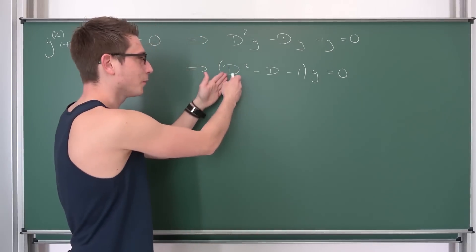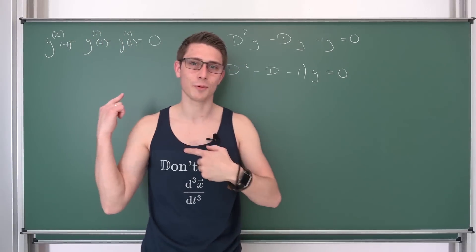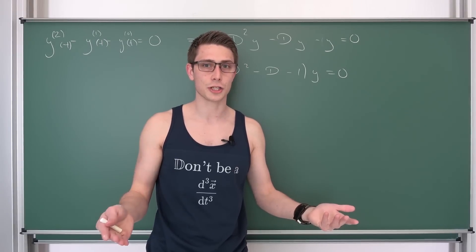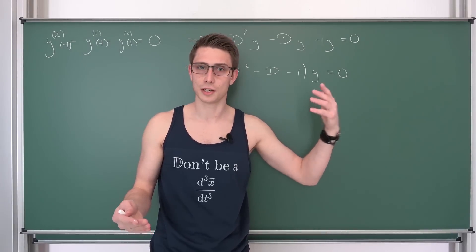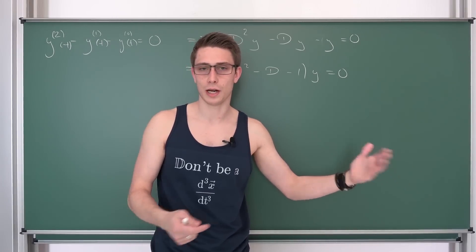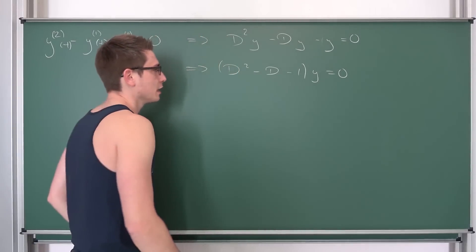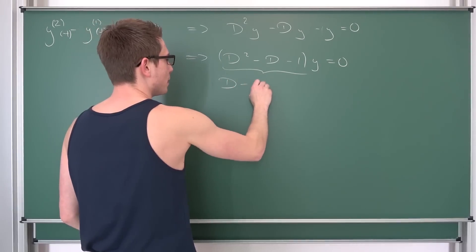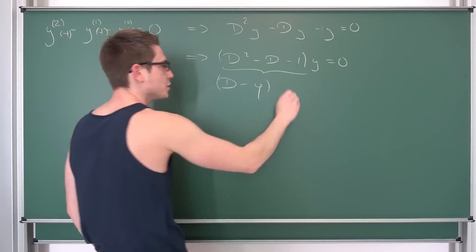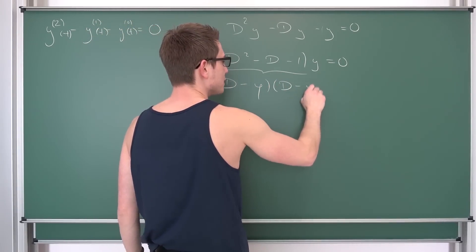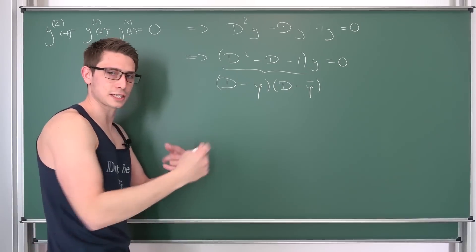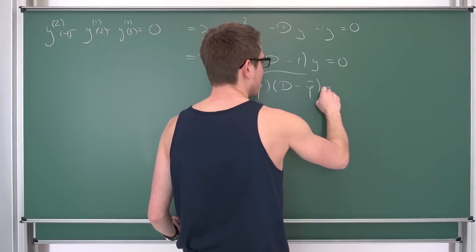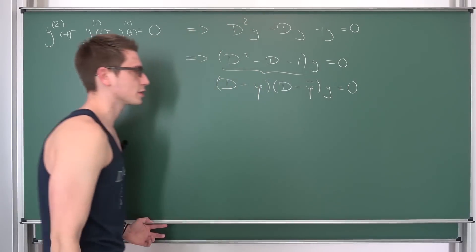Now, that's a pretty famous polynomial — I have written it on the chalkboard before. This is just the polynomial that gives you the Fibonacci numbers, the golden ratio and its conjugate. So this thing overall is nothing but (D minus φ)(D minus φ̄) applied to y equals 0, where φ is the golden ratio, and φ̄ is the conjugate — the golden ratio but with a negative sign in front of the square root of 5.